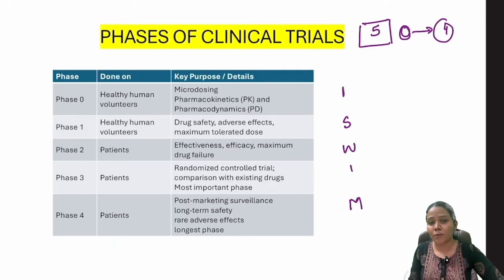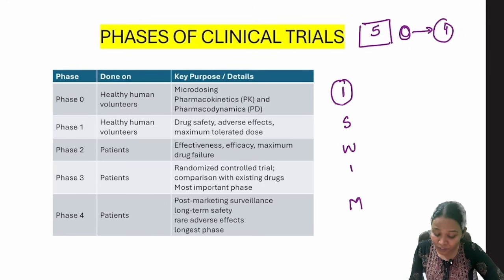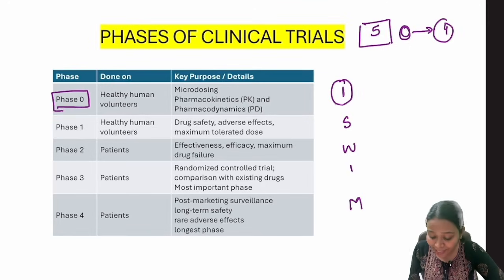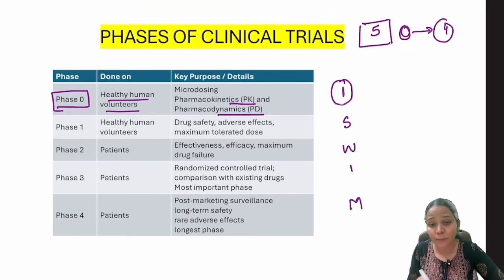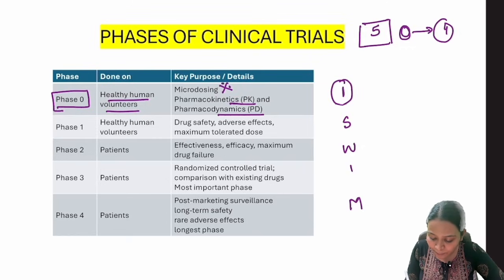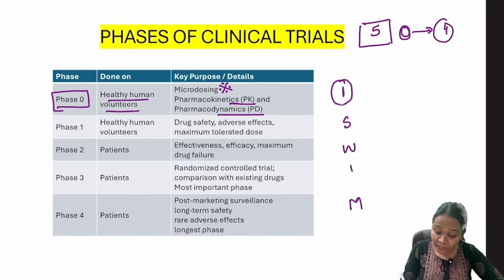I SWIM is a very famous mnemonic used for the phases of clinical trials. When I say 'I', I am starting — so 'I' looks like one, pointing to Phase 0. In Phase 0, we work with healthy human volunteers. The whole idea is to study the pharmacokinetics and pharmacodynamics of the drug, and we do micro dosing.